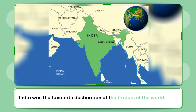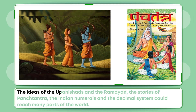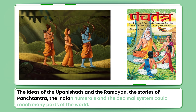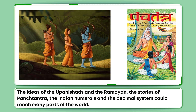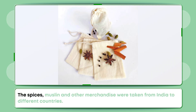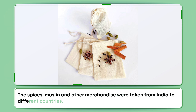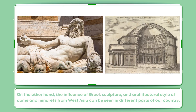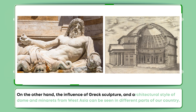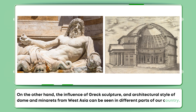India was the favorite destination of traders of the world. The ideas of the Upanishads and the Ramayana, the stories of Panchtantra, the Indian numerals and the decimal system could reach many parts of the world. The spices, muslin and other merchandise were taken from India to different countries. On the other hand, the influence of Greek sculpture and architectural style of dome and minarets from West Asia can be seen in different parts of our country.